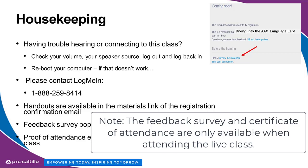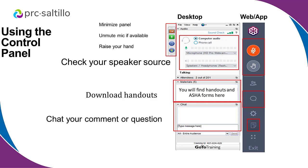This is the GoToTraining window pane. If you see the wider light gray bar, you're using the desktop version on your computer. If you have the darker skinny gray bar, you're using the web-based version or an app on a tablet. If you're having trouble with your sound, check the audio tab and make sure the right sound source is selected.